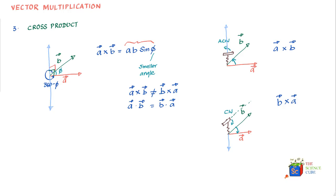To summarize the corkscrew rule: if you are asked to find a cross product, take a corkscrew and align its head with the direction of the first vector. Then turn the head of the corkscrew toward the direction of the second vector. Whichever direction the corkscrew would physically move — whether up or down — that is the direction of the resulting vector.